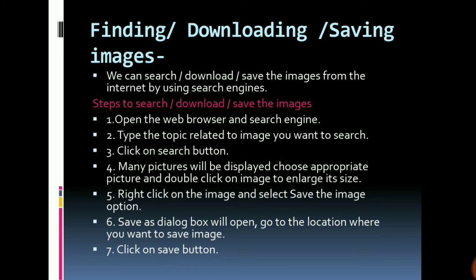To find, download, or save images through the internet: open the web browser and search engine, then type the topic related to the image you want to search. For example, if you want to search for a flower, type 'flower' and click the search button. Many pictures of flowers will be displayed. Choose a particular picture by double-clicking it, then right-click on the image and select the Save option.